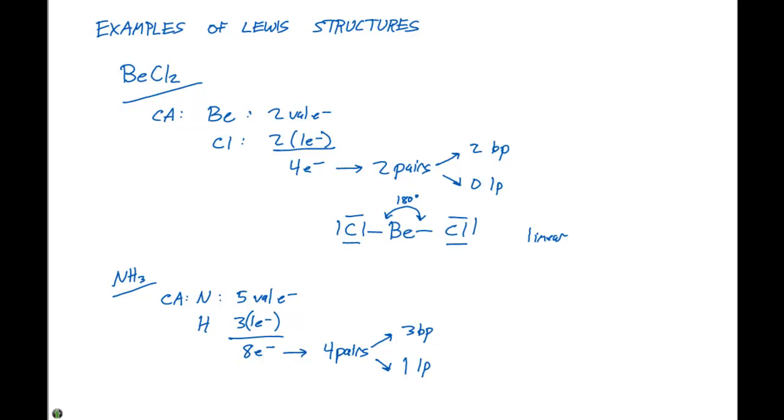When we draw the ammonia molecule, we have a nitrogen with bonds to three different hydrogens, then we have our lone pair of electrons on the nitrogen.